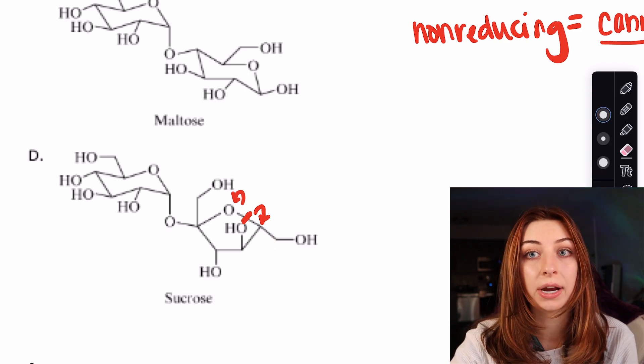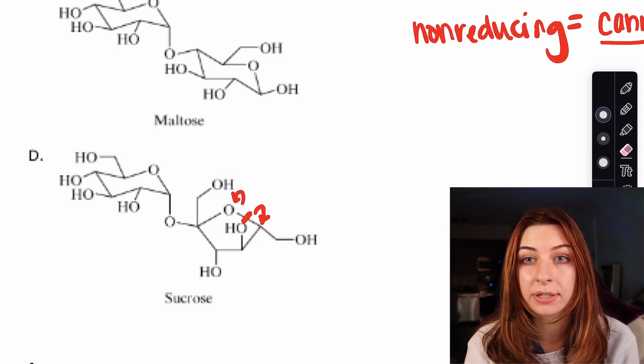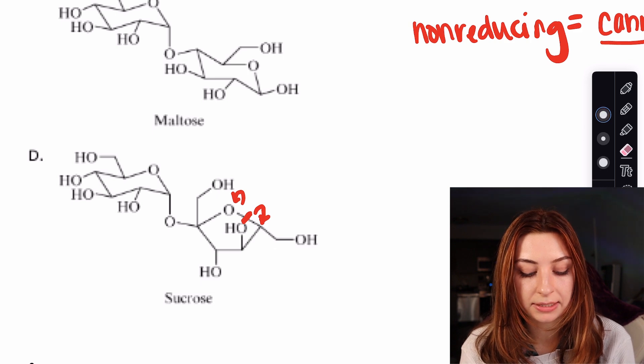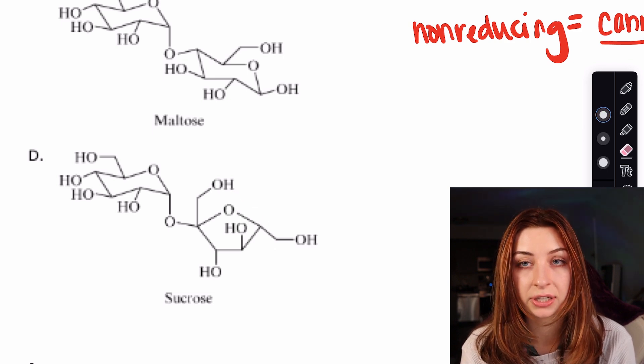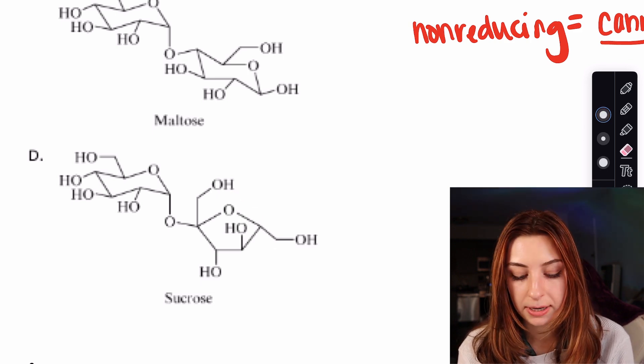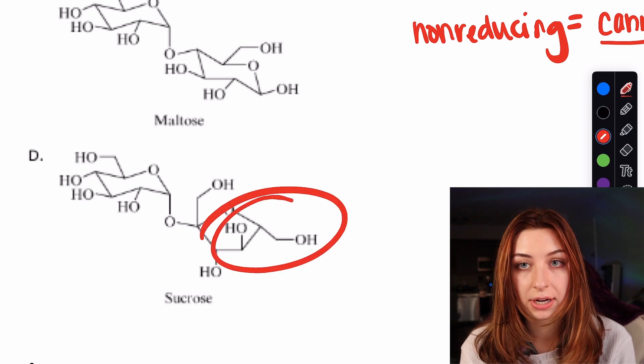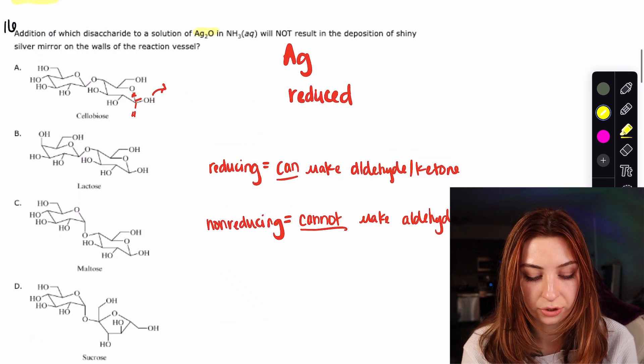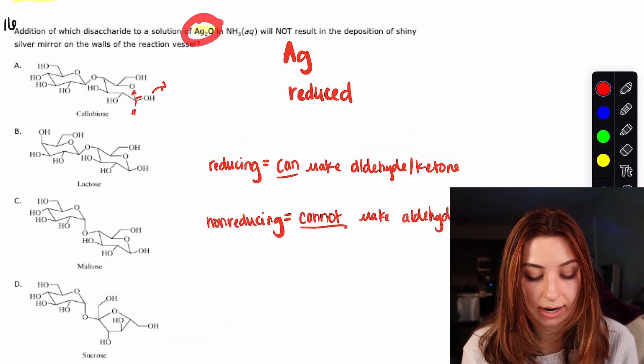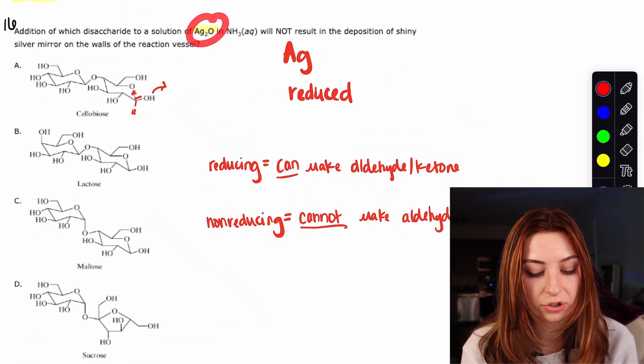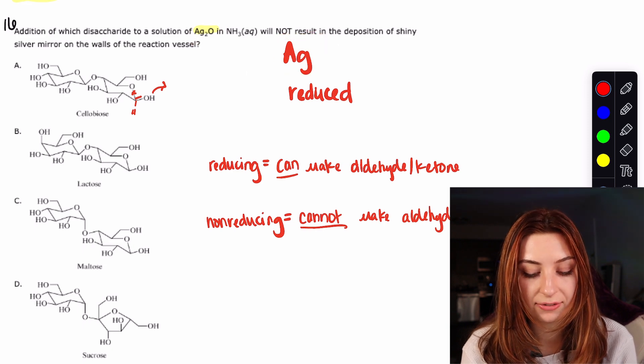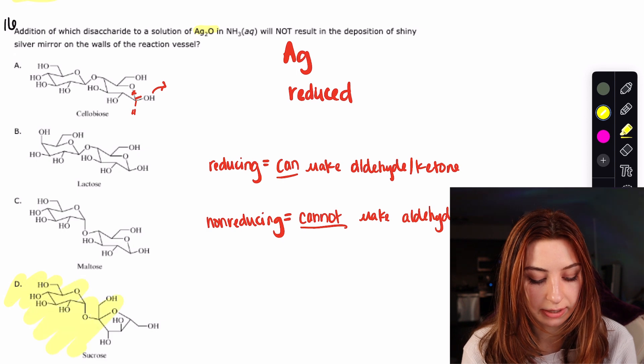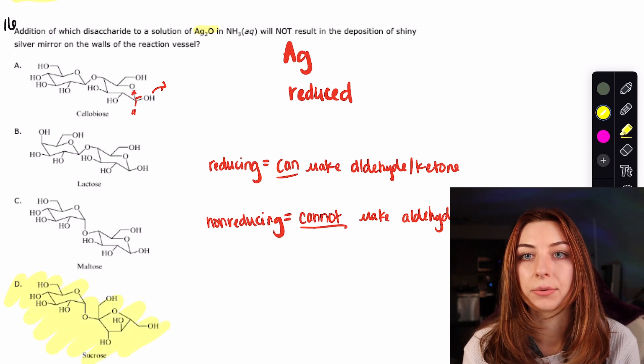Now if you didn't already know coming in that sucrose is a non-reducing sugar that might just be something easy to memorize. But if you didn't you can look here. If I break this bond right here which is kind of the analogous bond for a fructose molecule, you see that this section right here does not make an aldehyde or a ketone. It's because of this extra carbon right here and the way that these sugars fold when they're going from a Fisher projection to a Haworth projection. At the end of the day this cannot make an aldehyde or a ketone. Therefore it is a non-reducing sugar. Therefore it cannot reduce the silver oxide. So you will never get elemental silver and you will never have the deposition of shiny silver mirror on the walls of the reaction vessel.